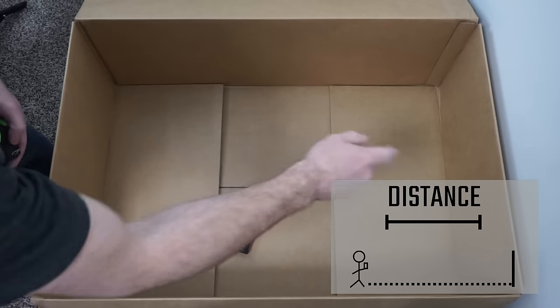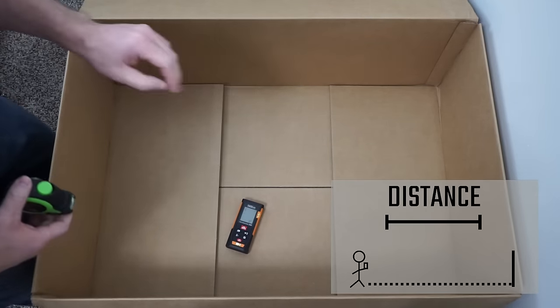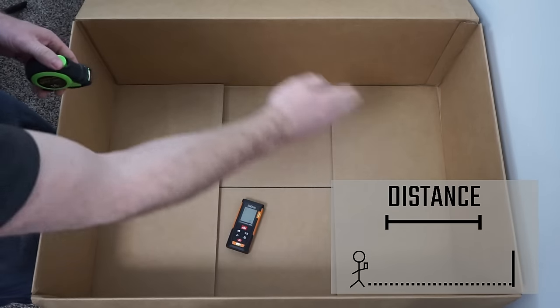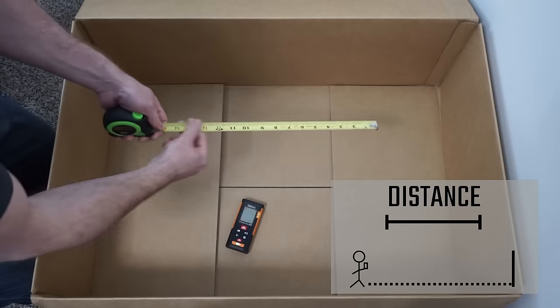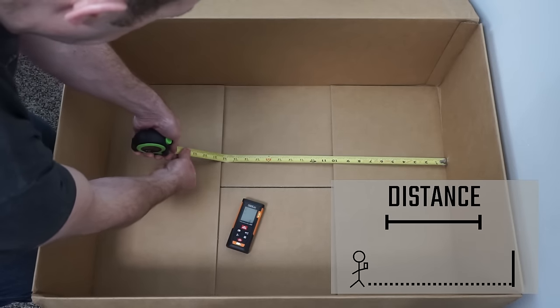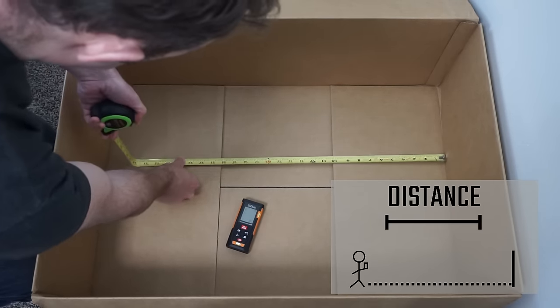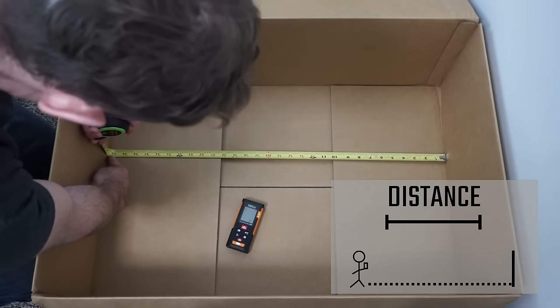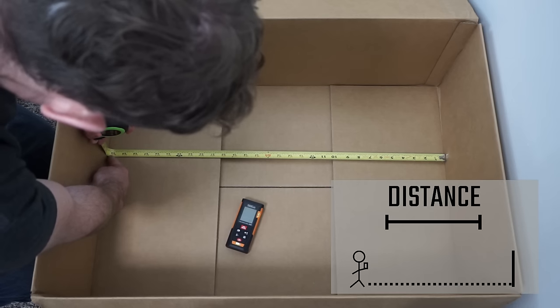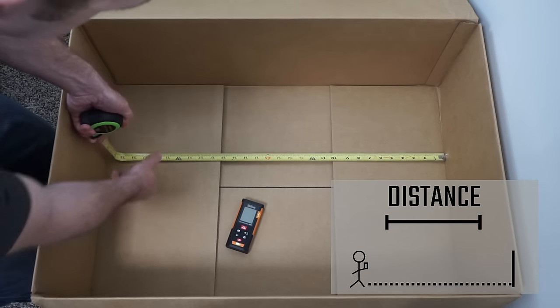So we will use this box to help show how to use this device. We'll pretend that this box is the inside of the room. We want to measure the length from one end to the other. So with my tape measure, I can see that it's about 2 feet 6 inches or just over 30 inches.